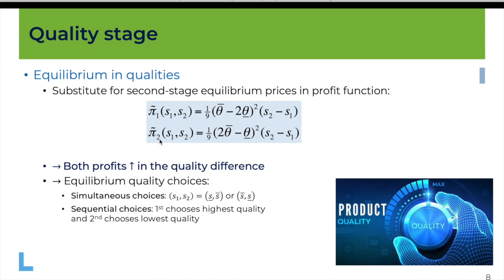It's not a surprise that firm 2's profit increases with quality differentiation since it produces the high quality. But it's more of a surprise for firm 1, which produces the low quality. In a sense, firm 1 benefits from decreasing its quality for a given quality of firm 2. The firm producing the low quality prefers to produce an even lower quality, because what it loses from consumers being willing to pay less is more than compensated by increased product differentiation, which allows both firms to set higher prices.